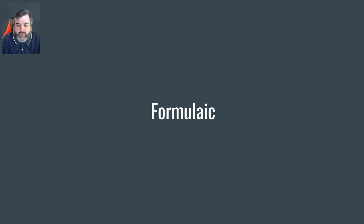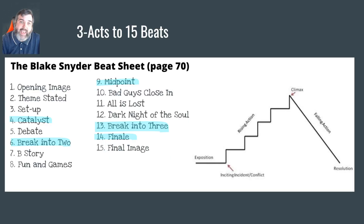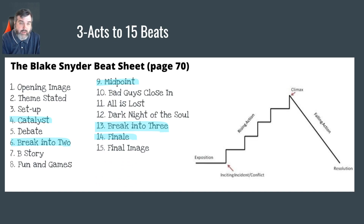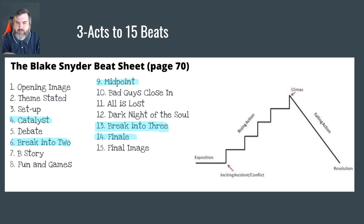We're going to continue along with the formulaic part — and I call this formulaic, that's my word for it. The Save the Cat sequence is kind of like the hero's journey in that it's very formulaic. Apparently there are 15 beats and three acts. You've probably heard about the three-act play in English class.